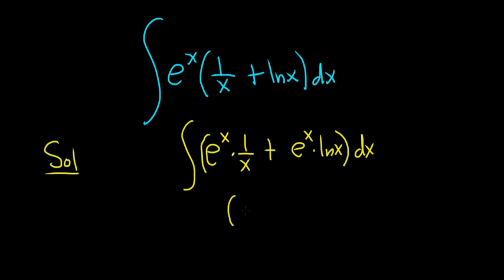Recall the product rule says if you have f times g and you take the derivative, this is equal to the derivative of the first piece, f prime, times the second plus the first times the derivative of the second piece.